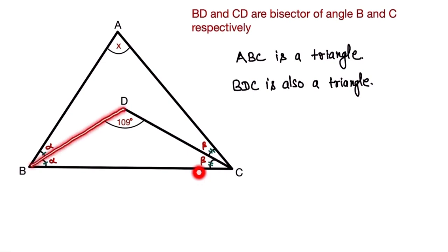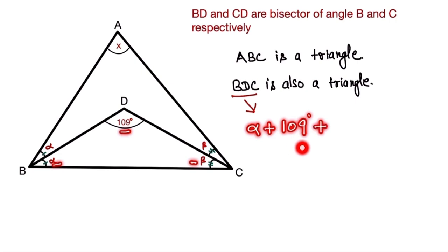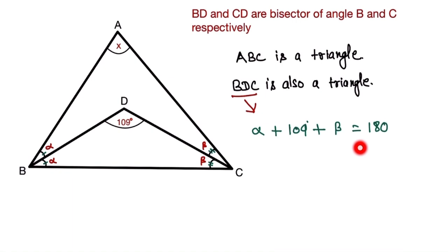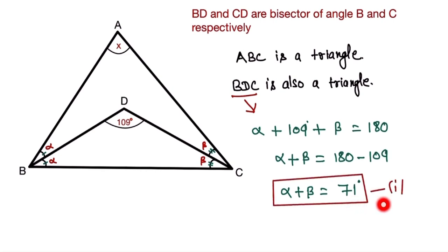First, we look at triangle BDC. As we know, the sum of all angles of a triangle is 180 degrees. So alpha plus beta plus 109 equals 180. Therefore, alpha plus beta equals 180 minus 109, which gives us alpha plus beta equals 71 degrees. That is our first equation.